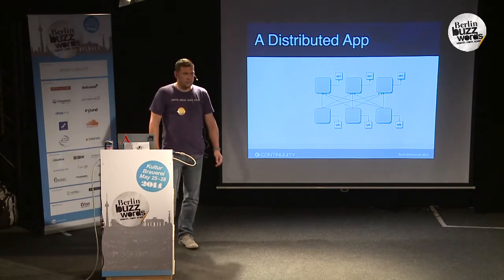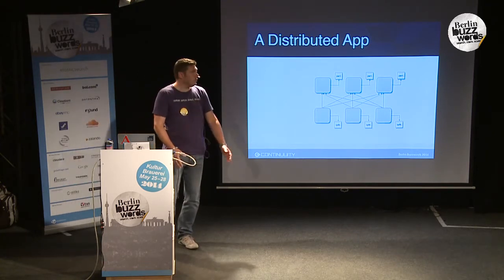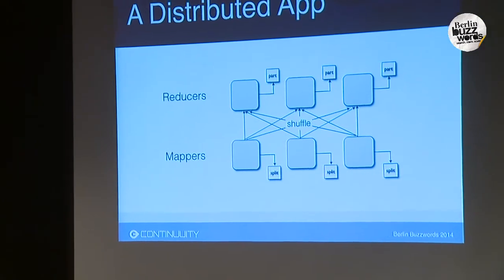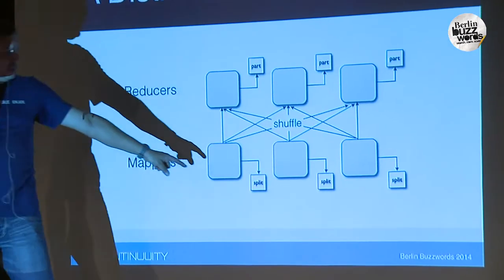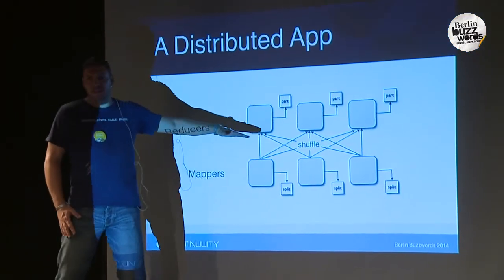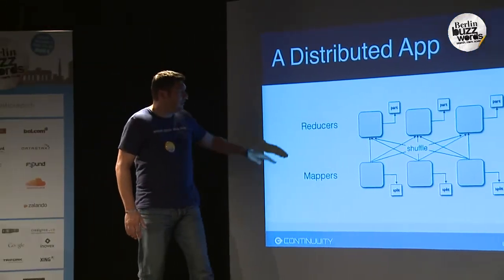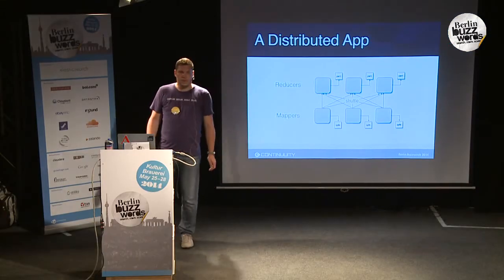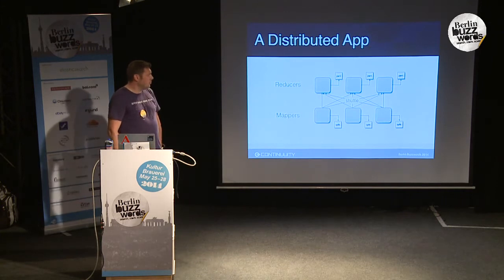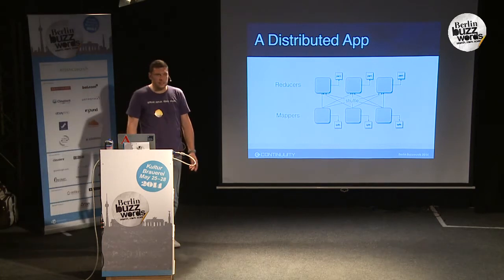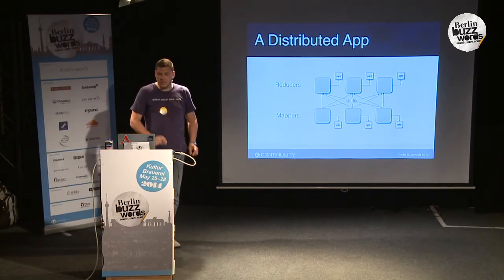A distributed application in Hadoop classically looks like a MapReduce job. You have a bunch of mappers, each reading a split from the file system and spitting out some tuples. There's a shuffle phase in between that does sorting, and then there's a bunch of reducers, each spitting out data and writing them to the file system into part files. This is a very powerful pattern — we can do lots of different types of data analysis, but we cannot do everything.